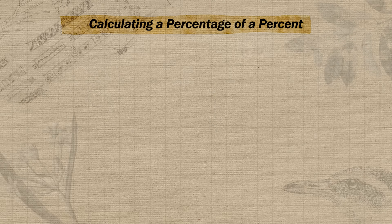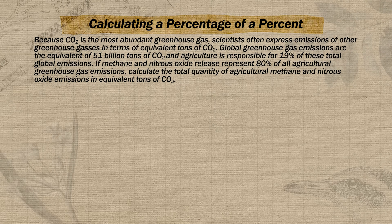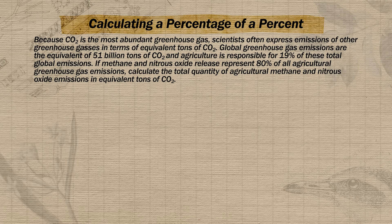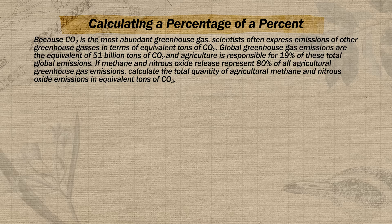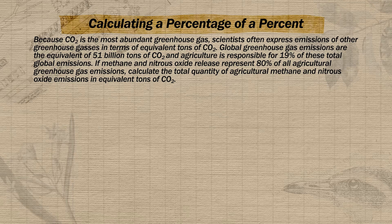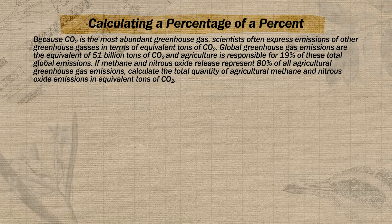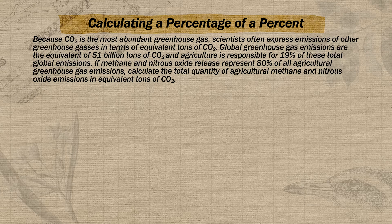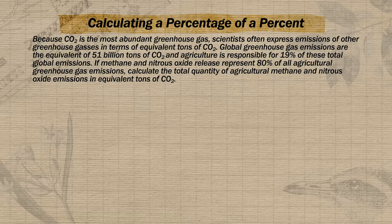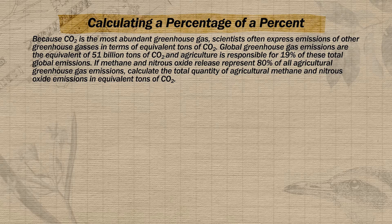In this practice problem, we're told that total global greenhouse gas emissions are equivalent to 51 billion tons of CO₂, that 19% of these come from agriculture, and that within that agricultural 19%, over 80% comes from methane and nitrous oxide. We're asked to calculate the total equivalent tons of CO₂ that these methane and nitrous oxide emissions represent.